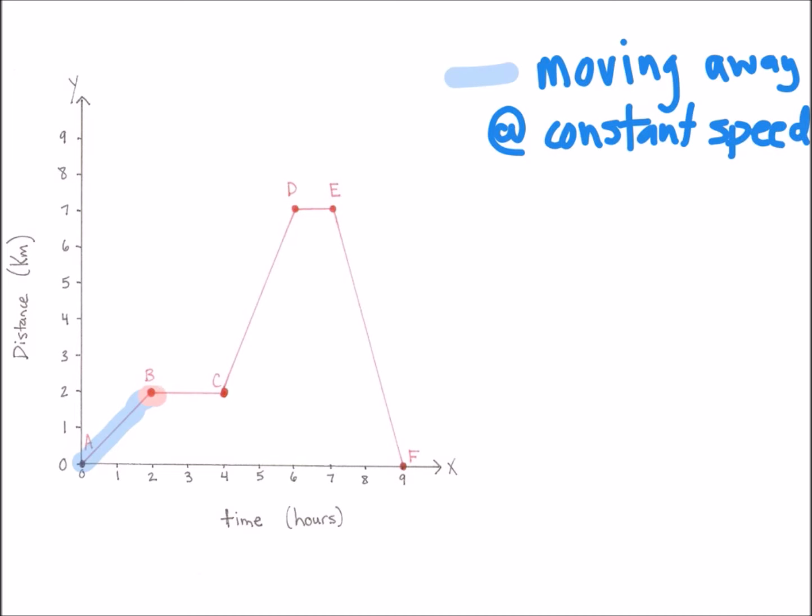The second segment is flat. It means we're not moving. At the beginning of the segment we're 2 kilometers away and that's still the same at the end of the segment so we're not moving. We can say there's no speed.